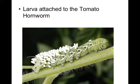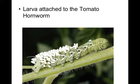Here we've got some larvae attached to a tomato hornworm. It looks like the larvae are benefiting from this, and the hornworm doesn't look like it's enjoying much of its life right now — it's got a lot of things on it and doesn't seem to be doing well. What type of symbiotic relationship is this?